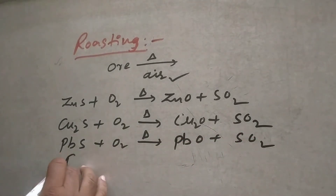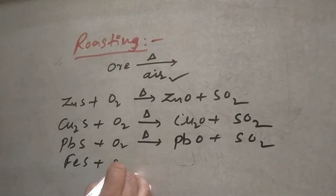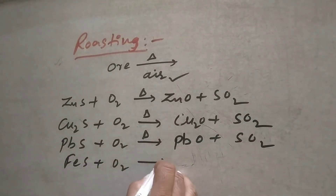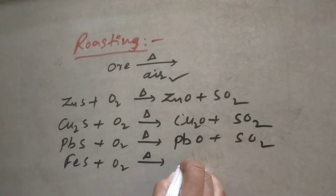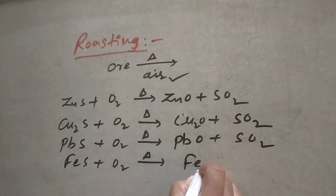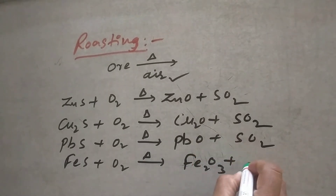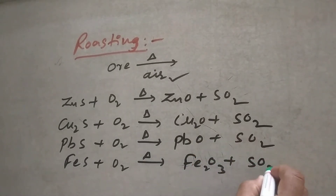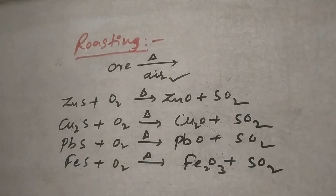Take FeS and heat it in the presence of air — automatically, in the presence of oxygen, you will get the corresponding oxide. So heating in the presence of air is called roasting.